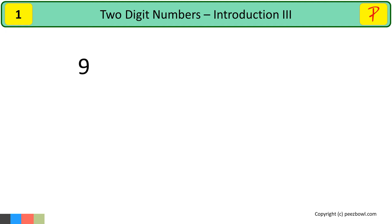Let us move to the next number. After 9, we have 10. Do you think 10 is a two-digit number? Yes. 10 is a two-digit number. As you can see, there are two digits: 1 and 0.